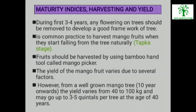Fruits should be harvested by using a bamboo hand tool called mango picker. The yield of mango fruit varies due to several factors: age of the tree, variety grown, climatic conditions, soil type, type of tree, on and off year, and management practices followed. However, from a well grown mango tree, 10 years onwards, the yield varies from 40 to 100 kg and may go up to 3 to 5 quintals per tree at the age of 40 years.